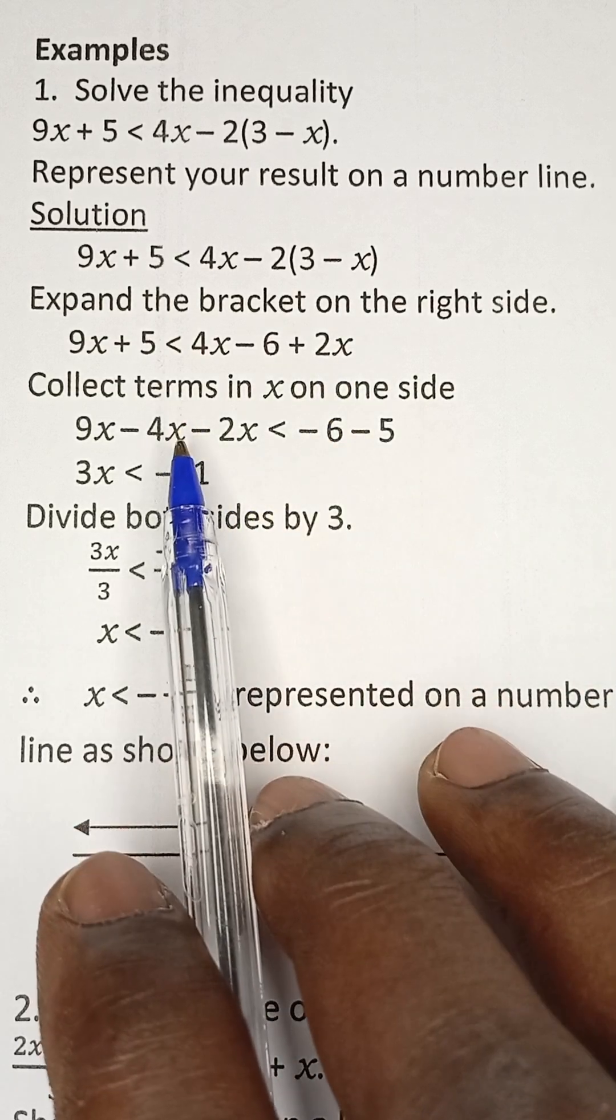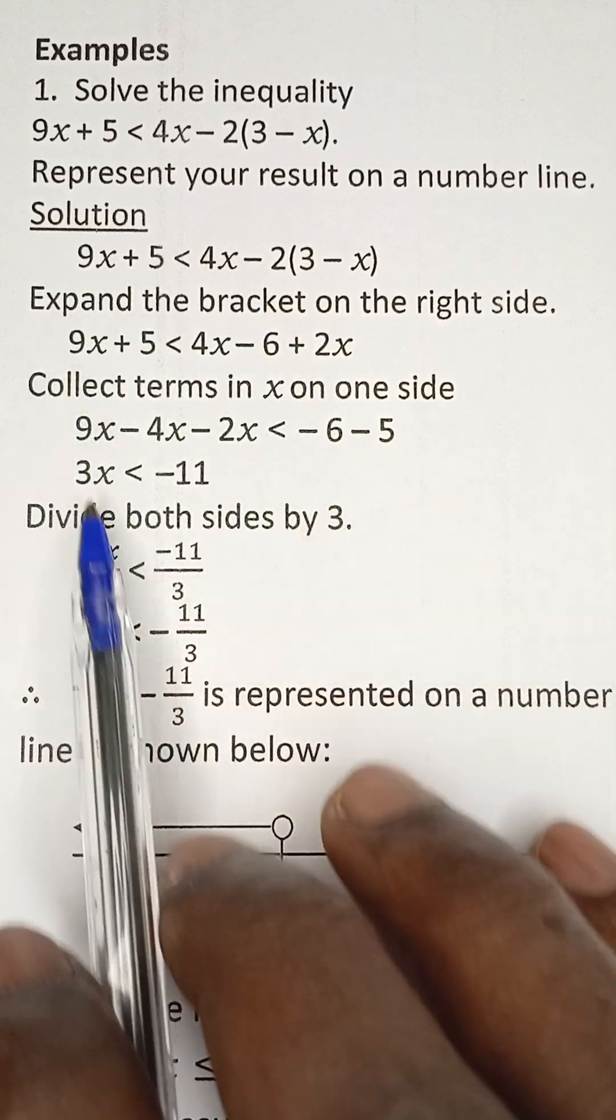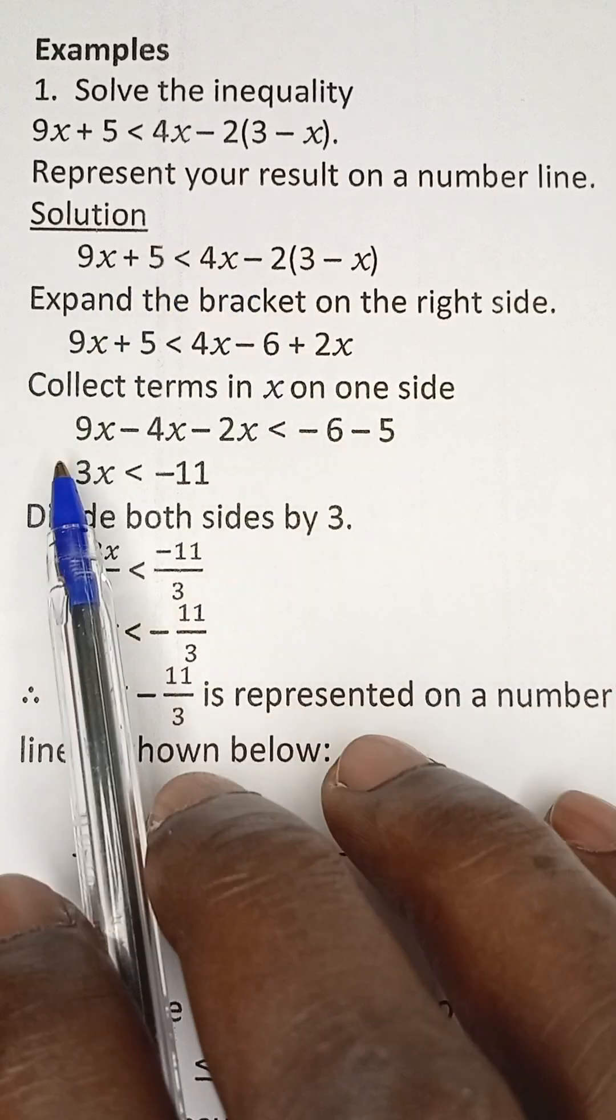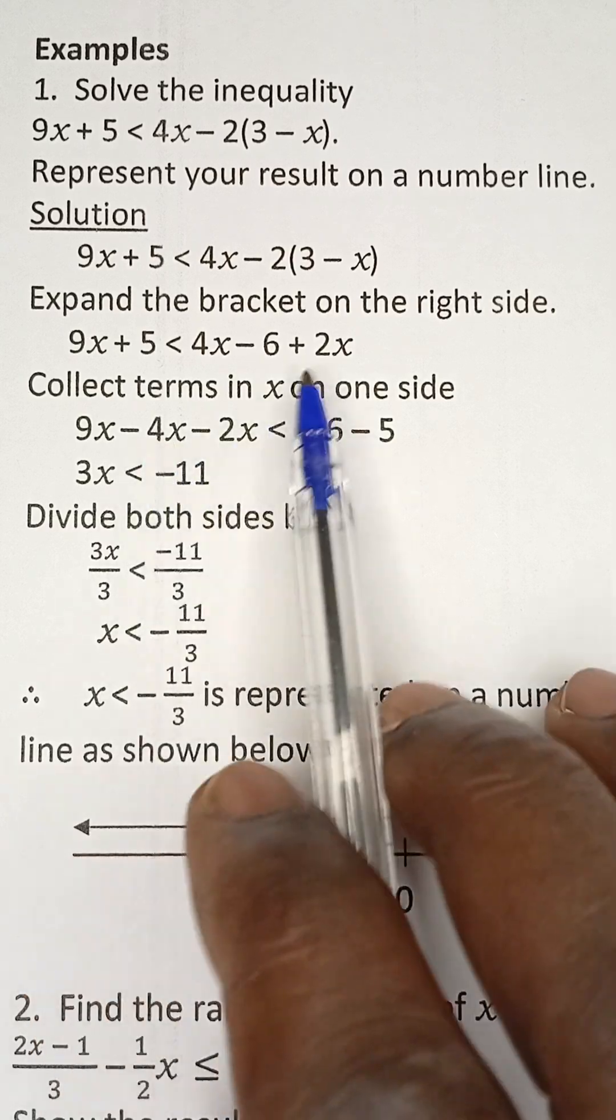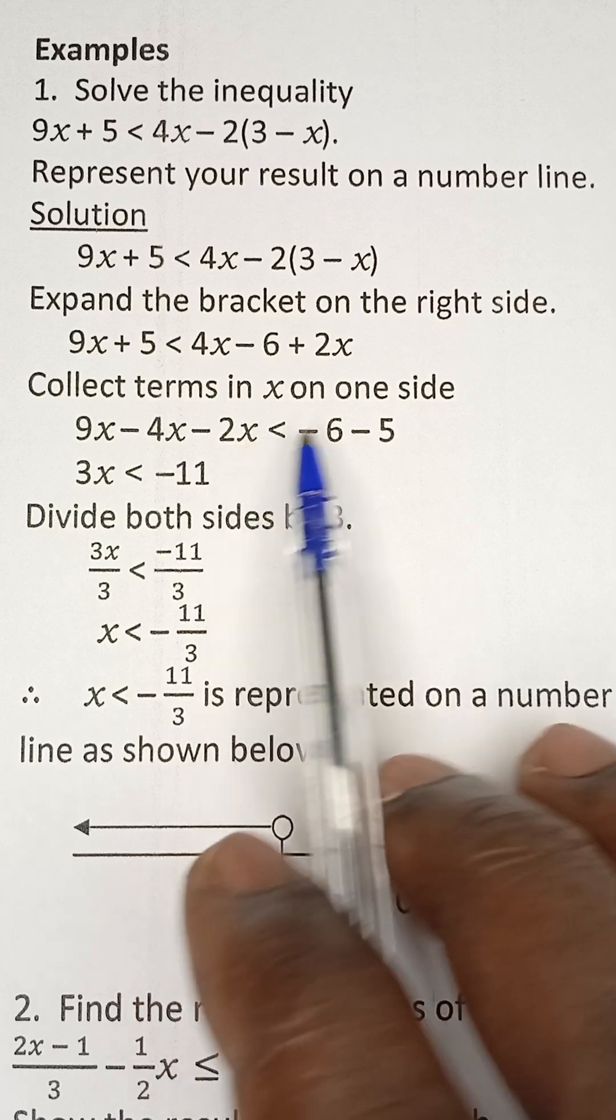And then we now collect like terms. So all the terms in x, we move them to the left-hand side. So I have 9x. This positive 4x moving to the left-hand side becomes negative 4x. And this positive 2x moving to the left-hand side becomes negative 2x.